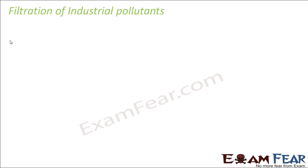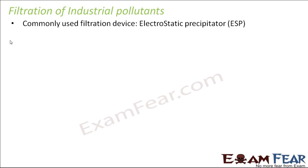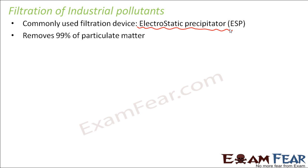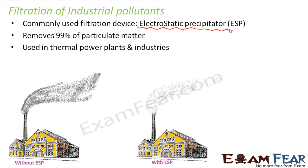To filter industrial pollutants so that poisonous substances do not get released to the atmosphere, a commonly used device is the electrostatic precipitator, often written as ESP. This device removes almost 99 percent of particulate matter from the smoke coming out of factory chimneys. You can imagine the extent of particulate matter present just from the black color of that smoke.